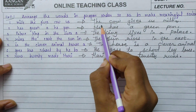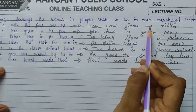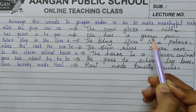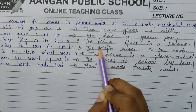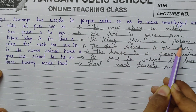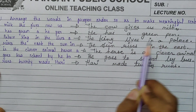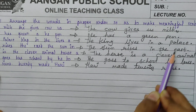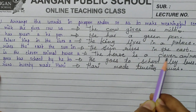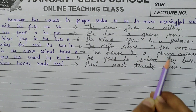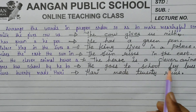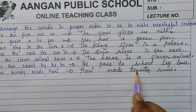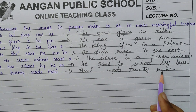Let us revise the answers: One — The cow gives us milk. Two — He has a green pen. Three — The king lives in a palace. Four — The sun rises in the east. Five — The horse is a clever animal. Six — He goes to school by bus. Seven — Hurry made 20 runs.